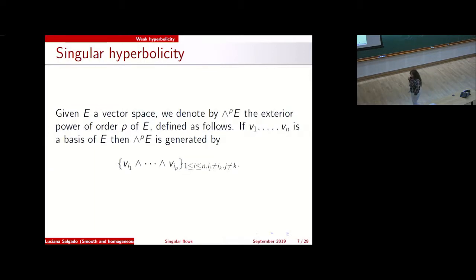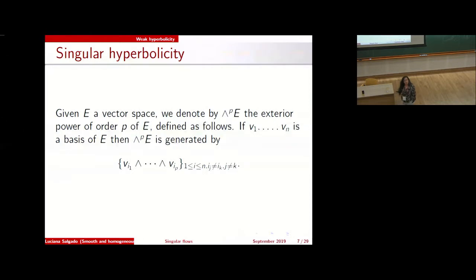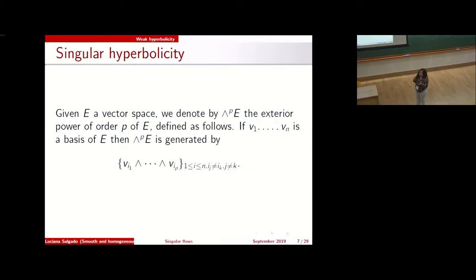I'm going to talk about hyperbolicity for flows which admit singularities accumulated by regular orbits. One of the first examples of a robust structure which is not uniformly hyperbolic is the Lorenz attractor — an example where we have a robust structure but it is not uniformly hyperbolic, because we have one singularity accumulated by regular orbits.